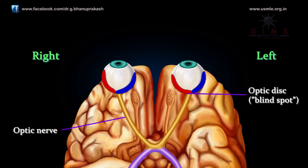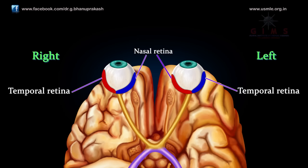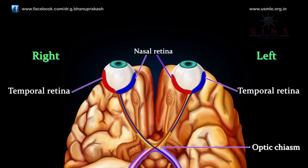Rather, the blind spot is simply a region from which we cannot obtain visual information. The optic nerves cross at the optic chiasm, which is located just anterior to the stalk of the pituitary gland. In humans, axons from the nasal retina cross over to the opposite side of the brain, while axons from the temporal retina project to their own side of the brain.